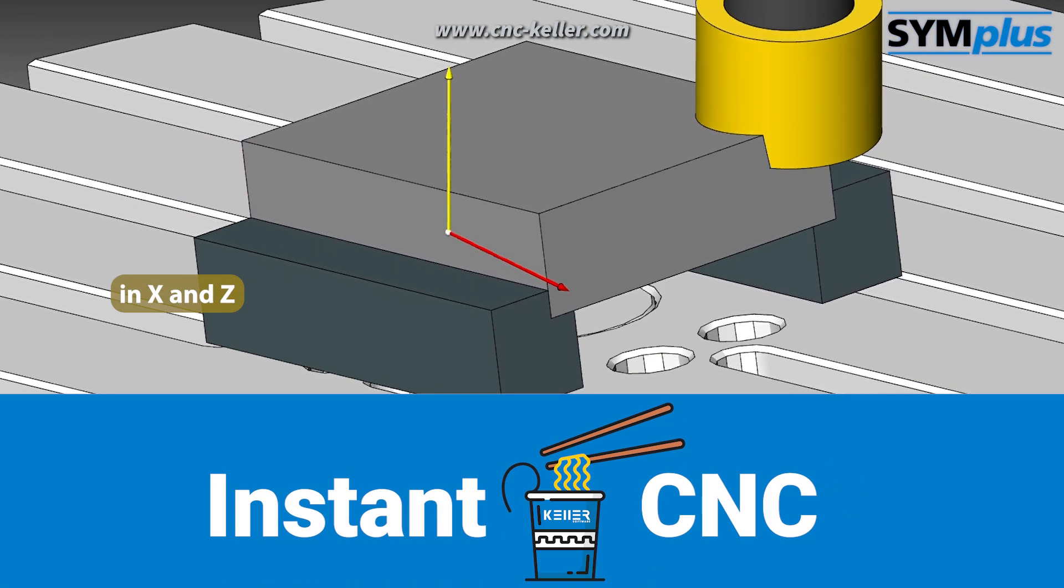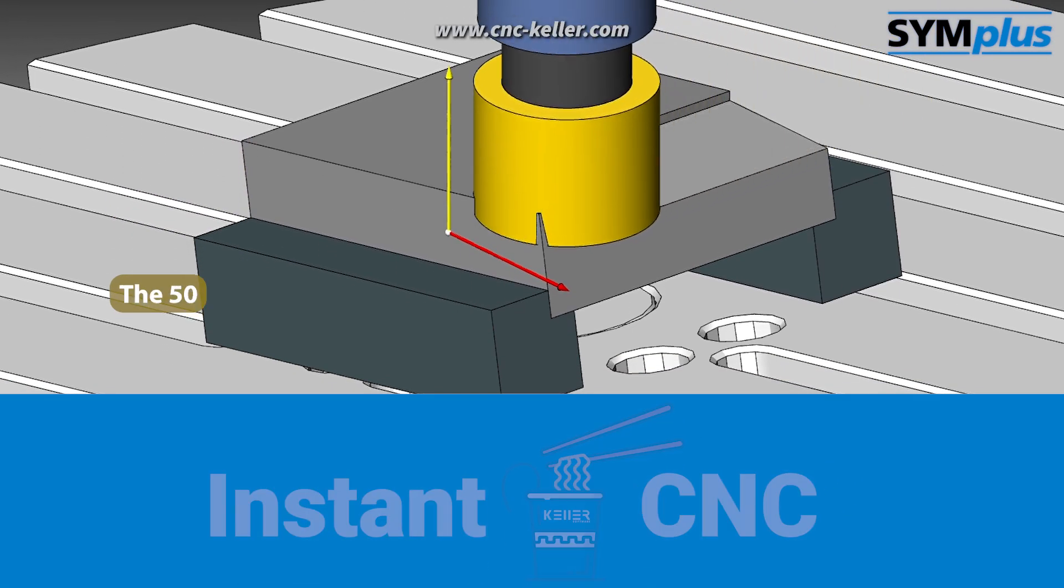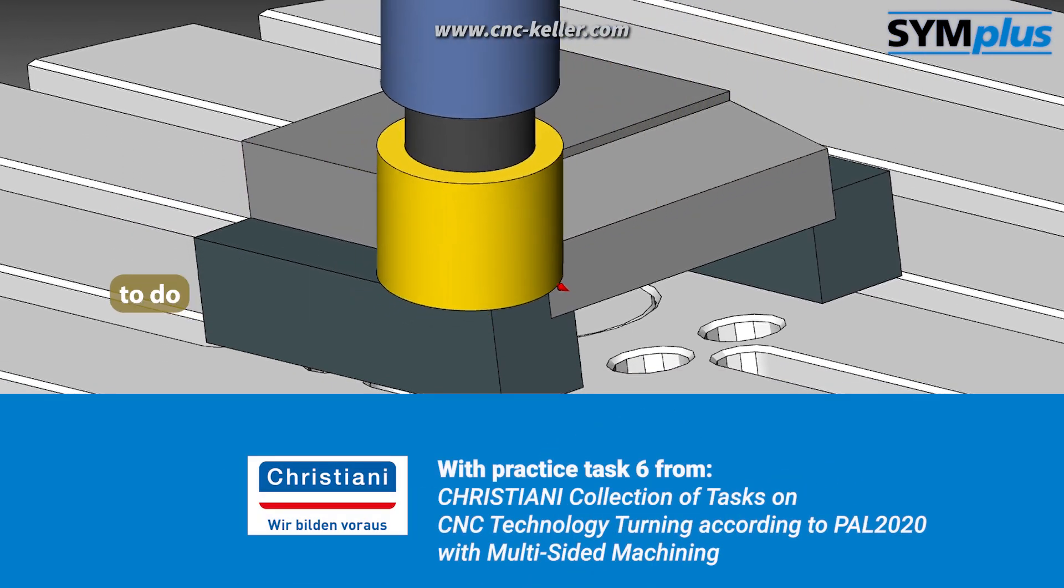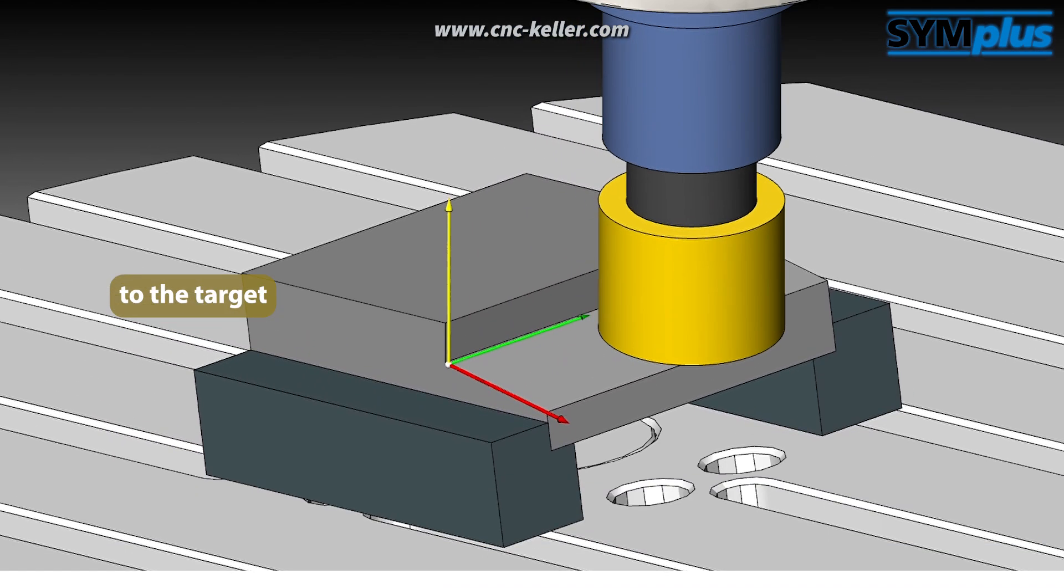We start with a zero offset in X and Zed and a 10 degree swivel. The 50mm roughing cutter has plenty to do and requires two infeeds to the target depth.